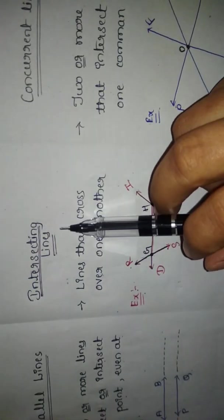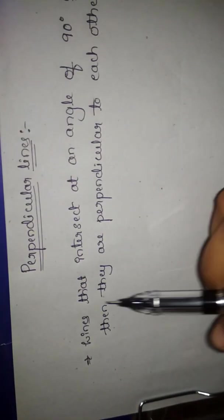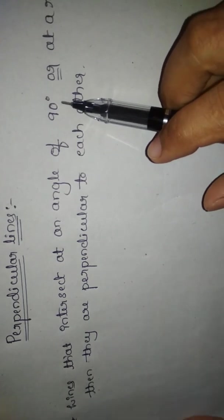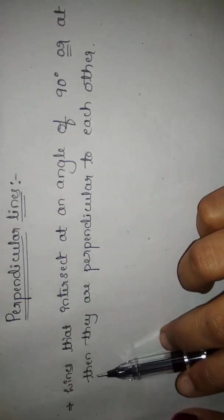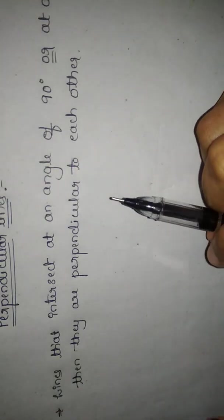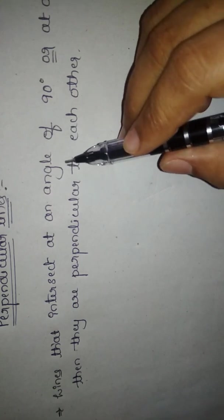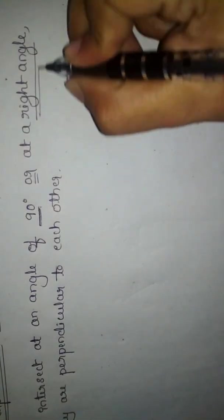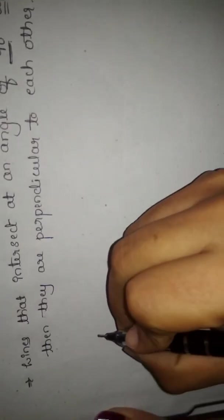Now we come to know what parallel lines, intersecting lines, and concurrent lines are. Still there is one more type called perpendicular lines. Lines that intersect at an angle of 90 degrees, or at a right angle, are perpendicular to each other. They must intersect exactly at 90 degrees or a right angle.